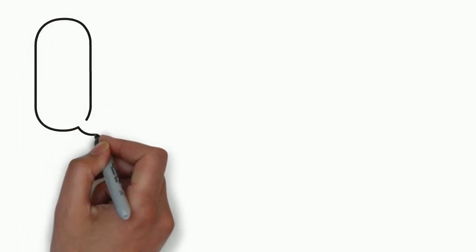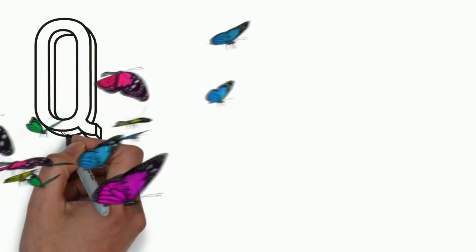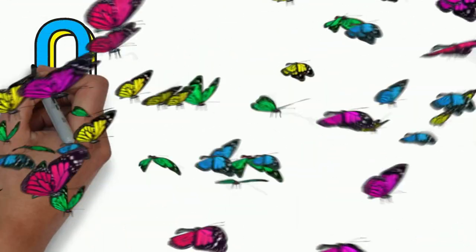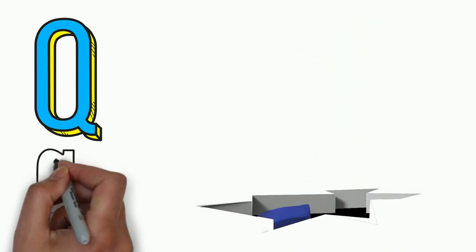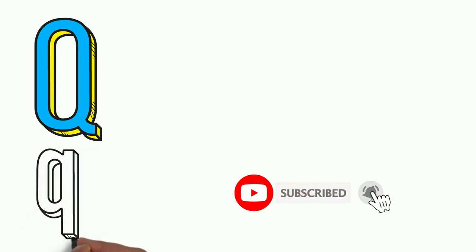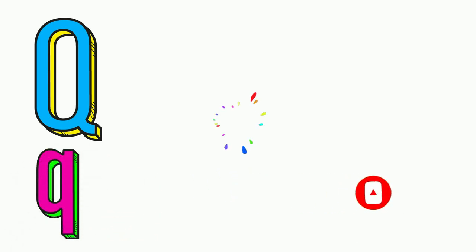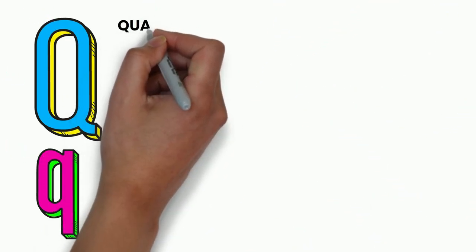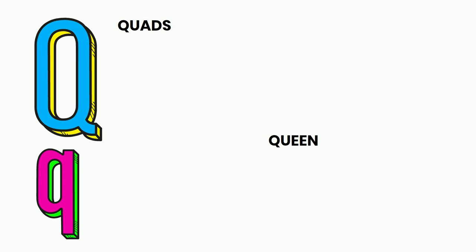Let's learn the alphabet by drawing. Draw the letter Q. Q, Q for quads. Q for queen. Q for quail. Q for quiet.